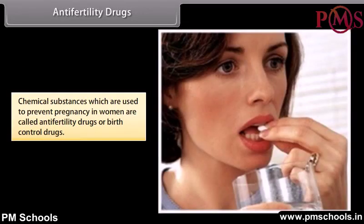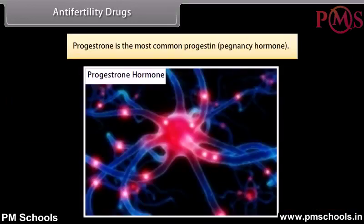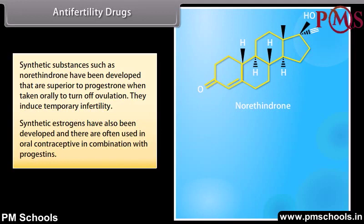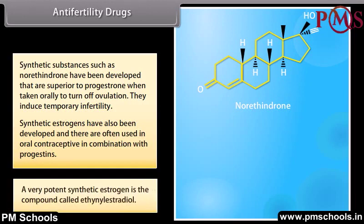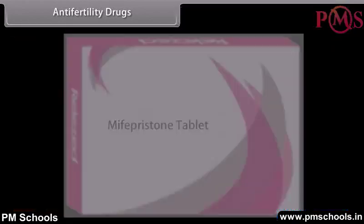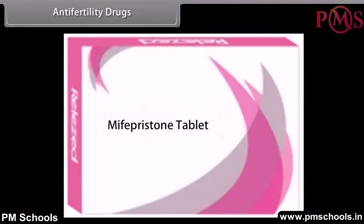Antifertility drugs: Chemical substances which are used to prevent pregnancy in women are called antifertility drugs or birth control drugs. Progesterone is the most common progestin. Synthetic substances such as norethindrone have been developed that are superior to progesterone; when taken orally they turn off ovulation and induce temporary infertility. Synthetic estrogens have also been developed and are often used in oral contraceptives in combination with progestins. A very potent synthetic estrogen is the compound called ethinyl estradiol. Mifepristone is a synthetic steroid that blocks the effects of progesterone and is used as a morning-after pill in many countries.